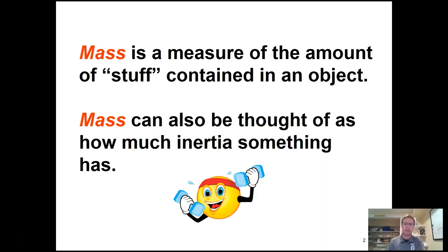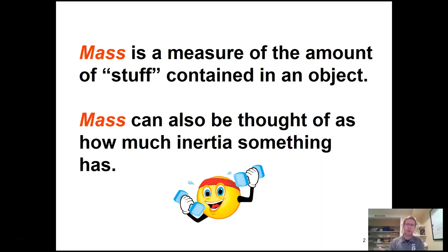We introduced mass at the very beginning of the semester, but haven't discussed it yet. Mass is a measurement of the amount of stuff or matter that something contains — that's the typical way of defining mass. But I'd encourage you to start conceptualizing mass as really a measurement of the amount of inertia something has. Inertia is the amount that something resists a change in its motion — objects tend to resist change in motion.